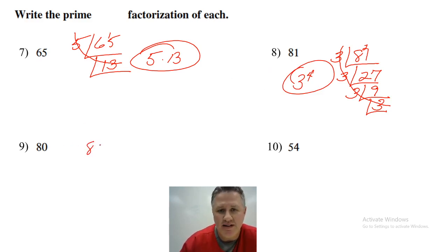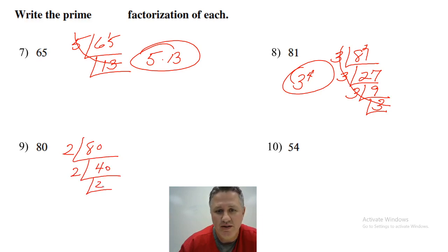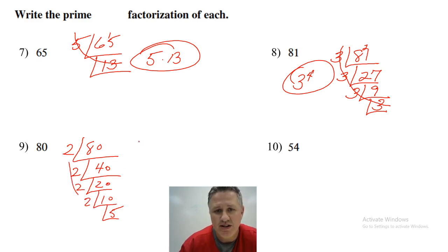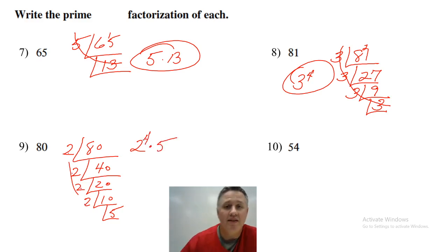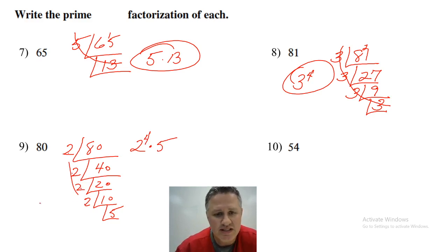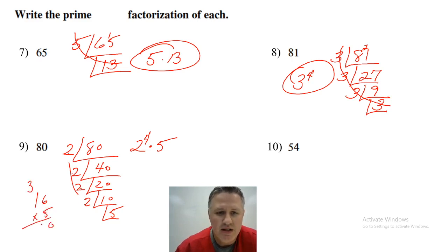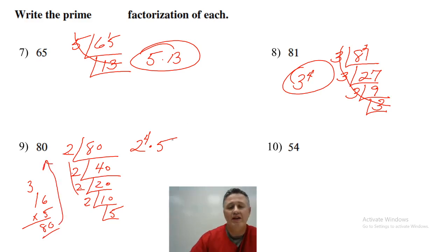Let's break down 80. It's tempting to put 10 on the outside, but 10 is not prime, so I'm going to use 2. Half of 80 is 40, then 20, then 10, then 5. That gives four 2s and one 5: 2⁴ × 5. If I want to check it: 2×2=4, 4×2=8, 8×2=16, 16×5=80. Especially on a quiz or test, you should multiply it back out and confirm you get 80.